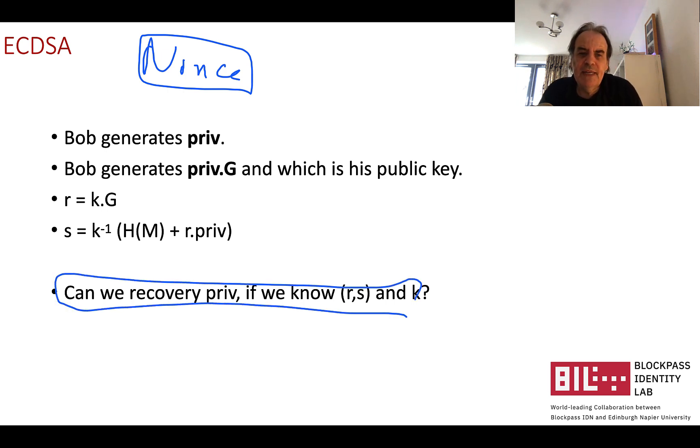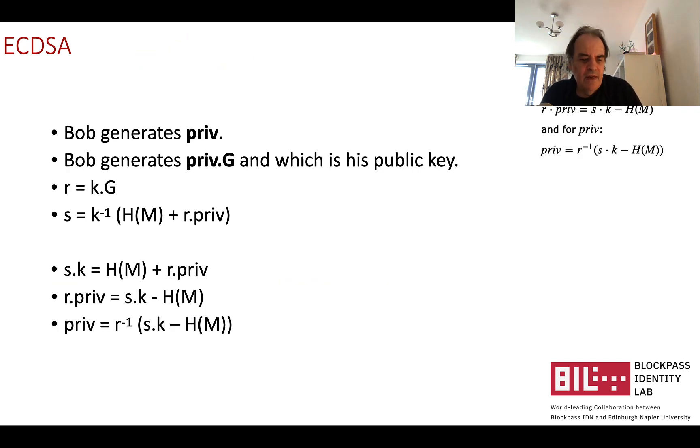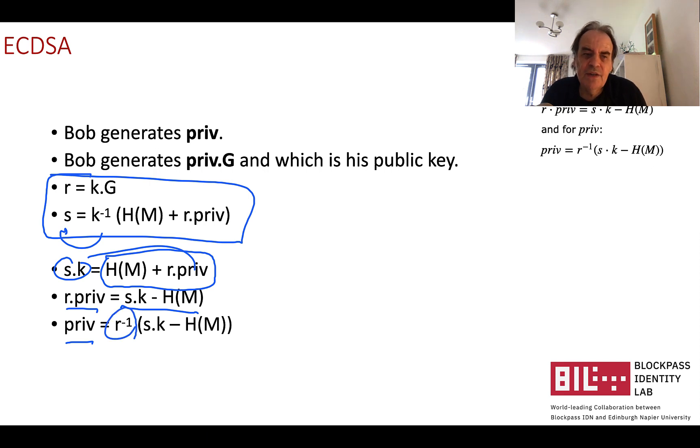Okay, so can we recover the private key if we know r and s and we know at least one of the k values. And it's true because if we take our r and s, then if we put that across there, that becomes s.k is equal to that. Then if we move that over the other side, we end up with the private key being r⁻¹ of (s times k minus h(m)). Everything is done with a mod of our order in there too. So we can see in this case, if Bob has released his nonce value in generating any of the signatures, then Eve will be able to generate his private key from that.